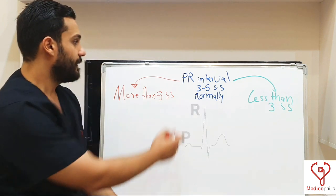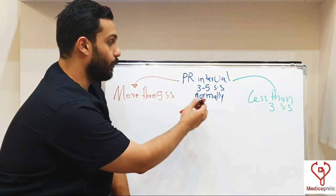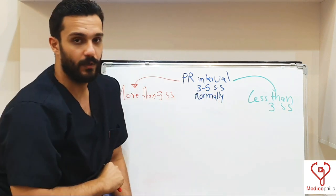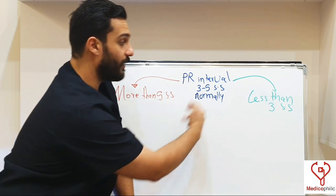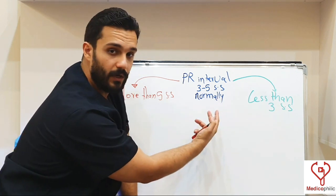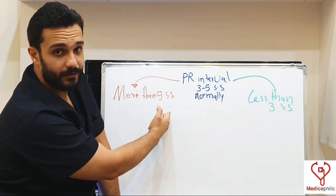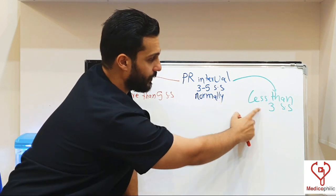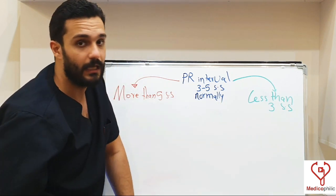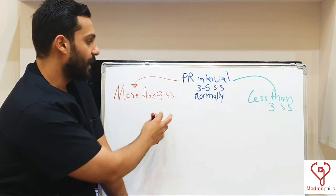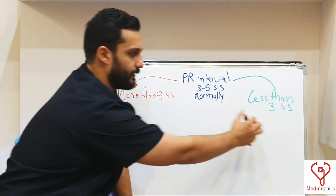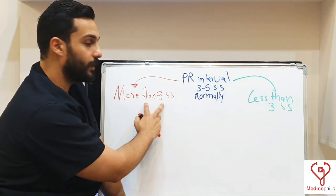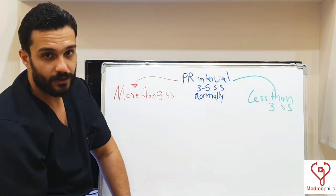The PR interval width — the normal width is between 3 to 5 small squares. If it was more than 5 small squares, it is called prolonged PR interval. And if it was less than 3 small squares, it is called short PR interval. Each of these is having its causes, beginning with the prolongation of the PR interval.